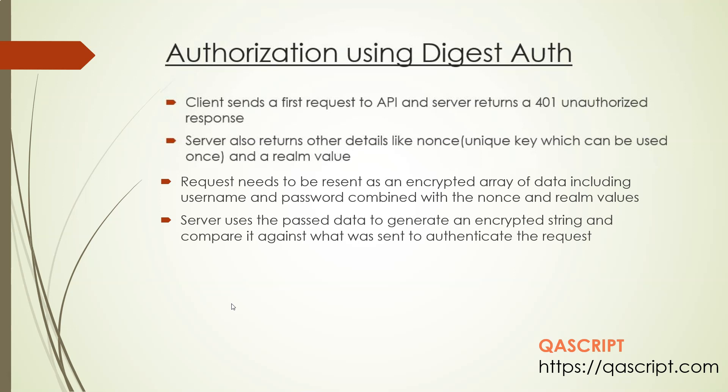The server basically uses this data which you have passed with the request to generate an encrypted string, and then it compares it against what was sent to authenticate the request. As you can see, it's a more robust kind of authorization because it uses multiple levels of authorization — different values which are encrypted — and you need to send multiple requests in order to get those values and then authorize your request.